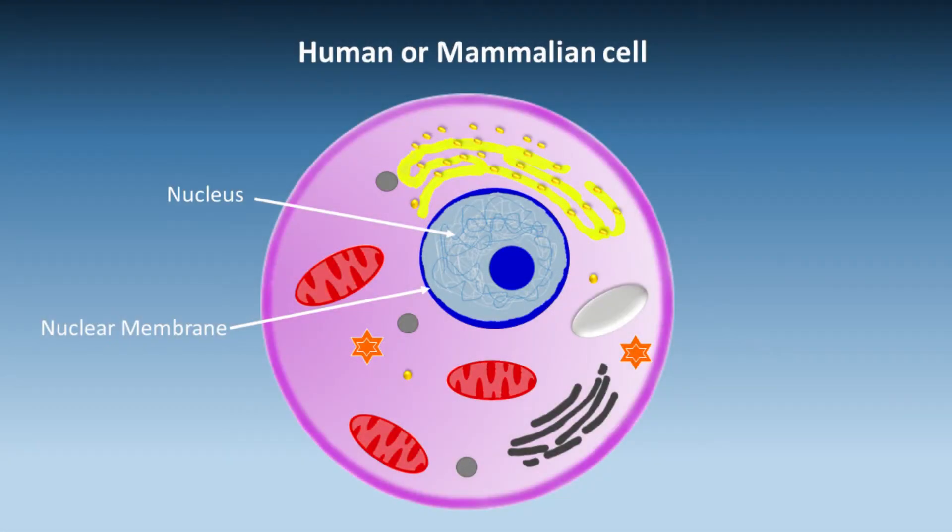The blue nucleus is the command centre of the cell. While this is still active, any remaining structures inside the cell may attempt to carry on.